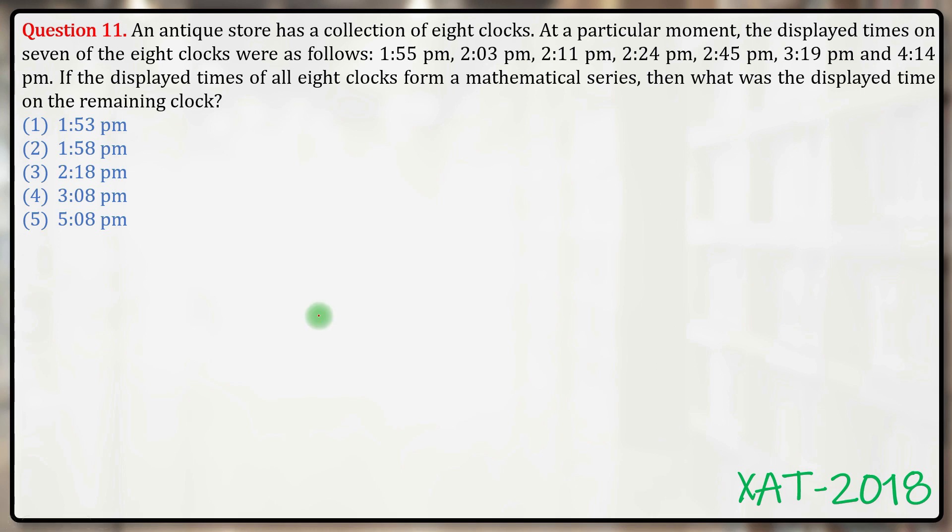If the displayed times of all eight clocks form a mathematical series, then what was the displayed time on the remaining clock? One thing that's always helpful to identify a series is finding the difference of the numbers given in the series, so I'd straightaway go with that.